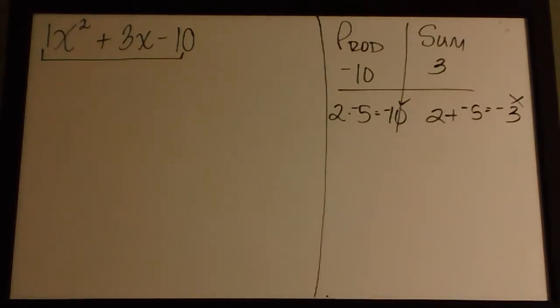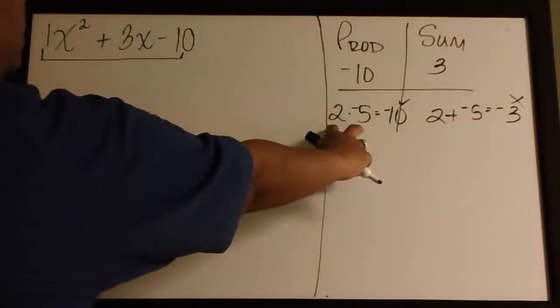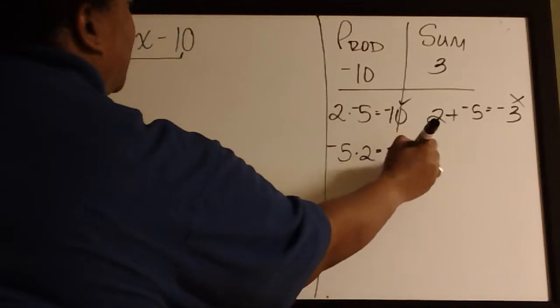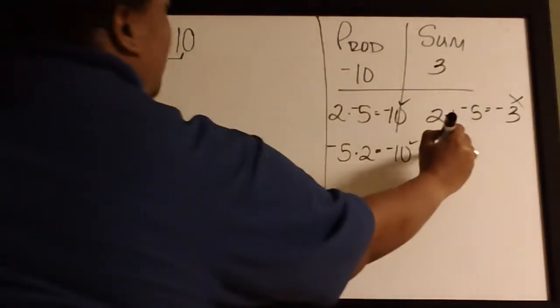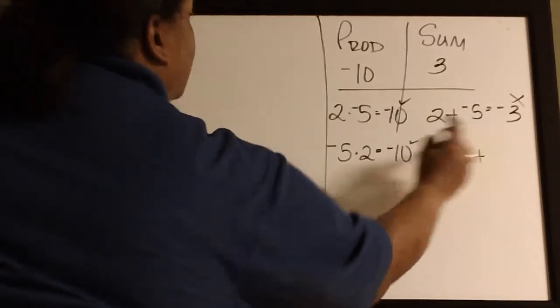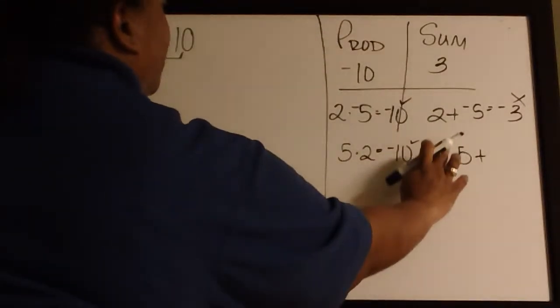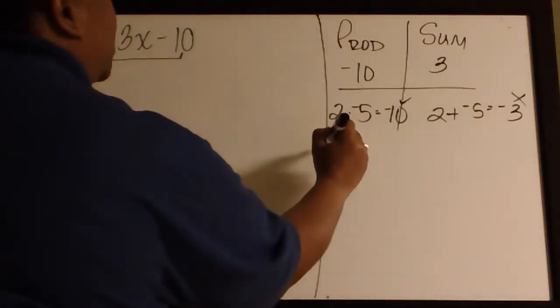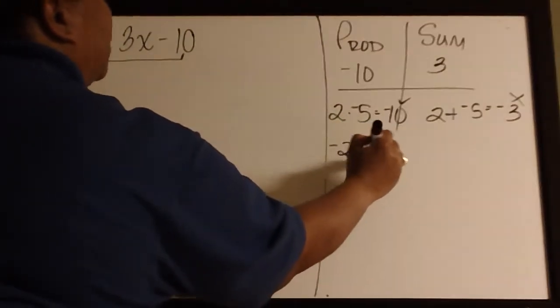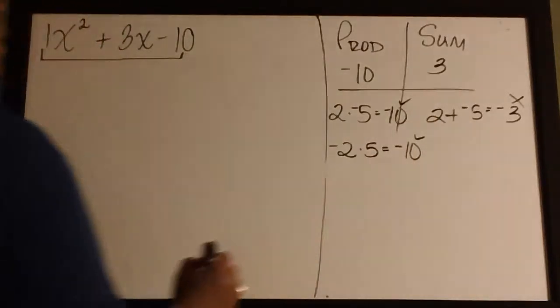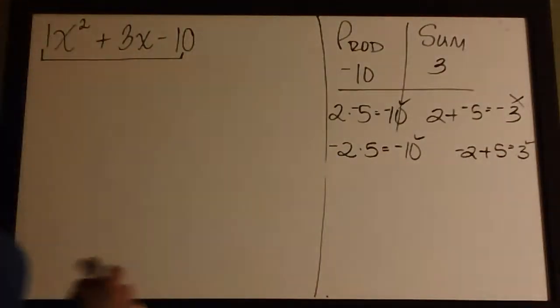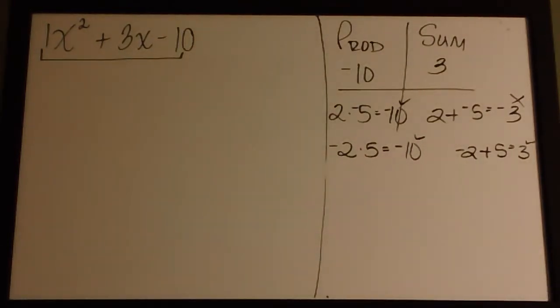We need a positive 3. So what I can try doing is changing the signs on the numbers. So instead I can try negative 5 times 2, which gives me negative 10. So that checks out. And negative 2 plus 5 gives us the positive 3 that we want. So we will be filling in the middle with a negative 2x and a positive 5x.